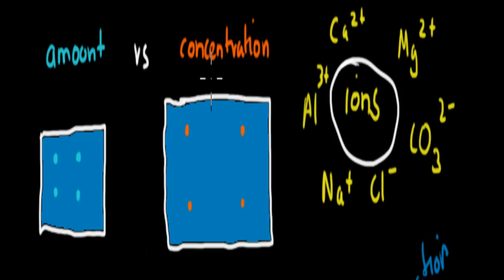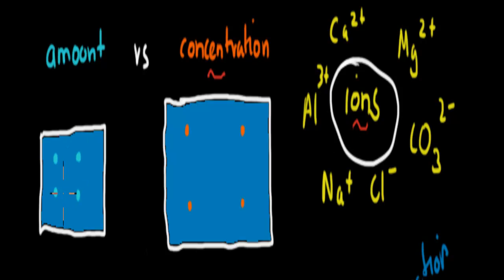In this video we're going to talk about what can affect the concentration of different types of ions. Remember, concentration is different to the amount of ions. The amount would be just the number of ions, or the number in grams, whereas concentration refers to how many of those ions, or grams of ions, would be in any given area or volume.